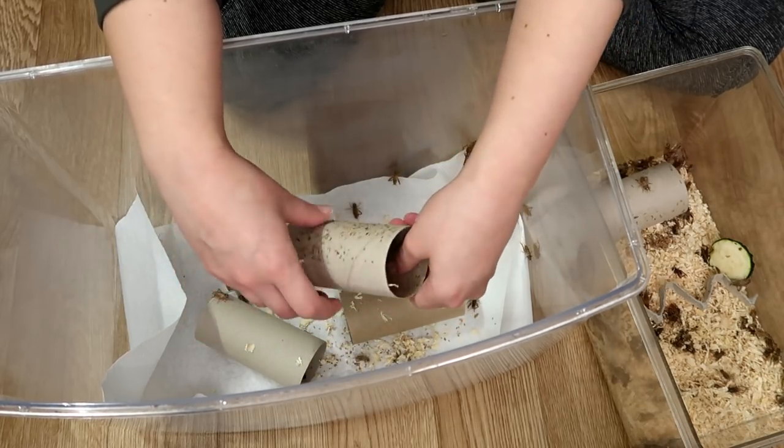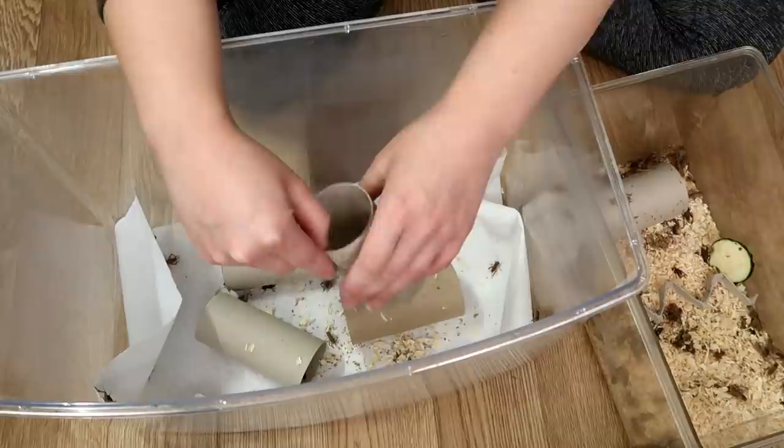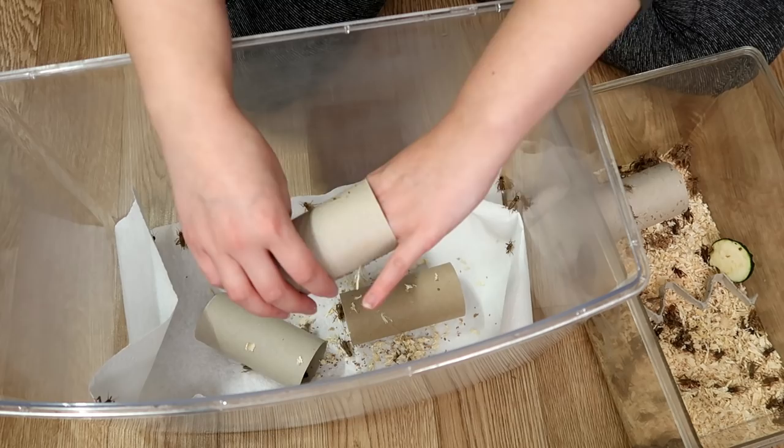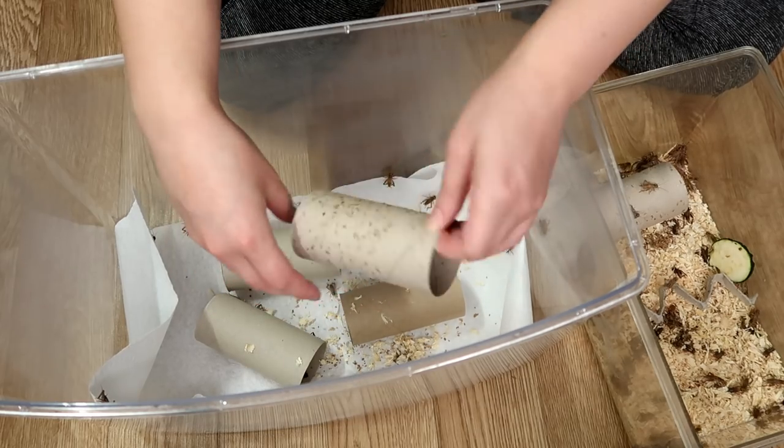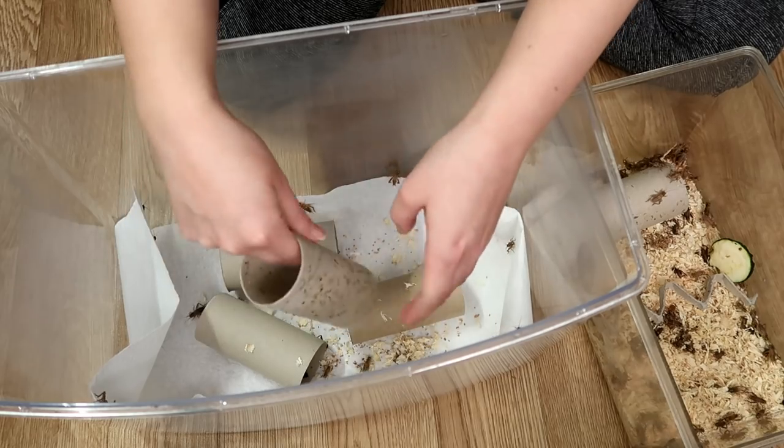And each female can lay 800 eggs. So no wonder we had so many. So this is why I don't usually use oats. I won't be using oats in the future again. And I'm kind of glad I actually did remove the morio worms and also the meal worms because they were just one above each other.